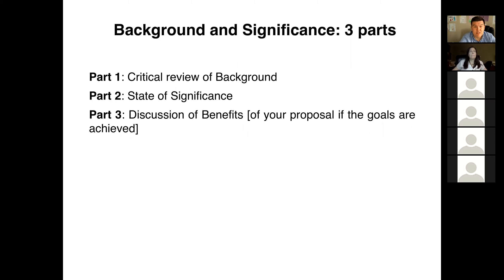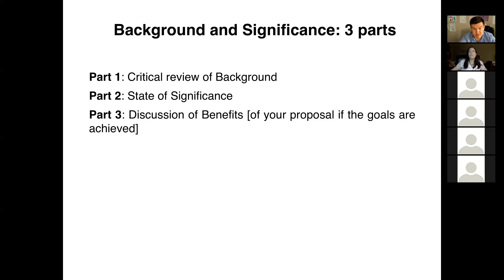When you think about background and significance, you might think it's just two parts, but in reality there are significantly more things to discuss. You will be performing a critical review of the background or literature. You will be providing a statement of significance, discussing why your project is significant. You should also champion and discuss the benefits of your proposal if the goals are accomplished.